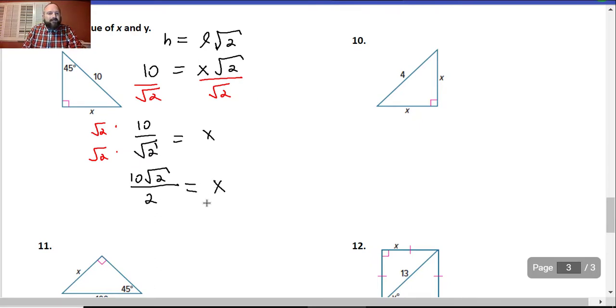But wait, there's more. We just have to simplify. 10 divided by 2 is what? Alright, it's 5. Alright, so we have 5 radical 2 is equal to x. There we go.